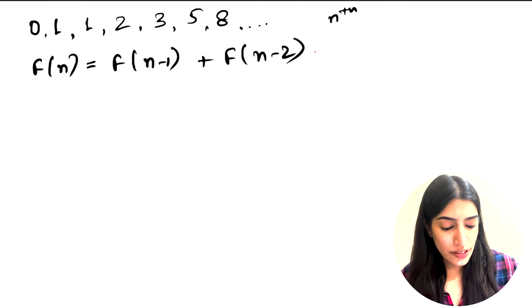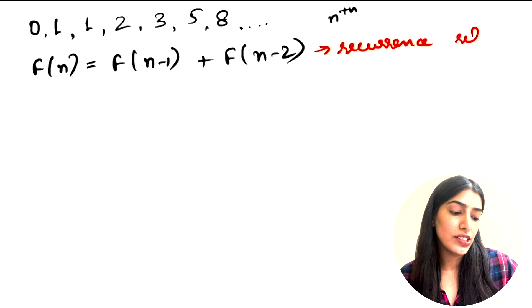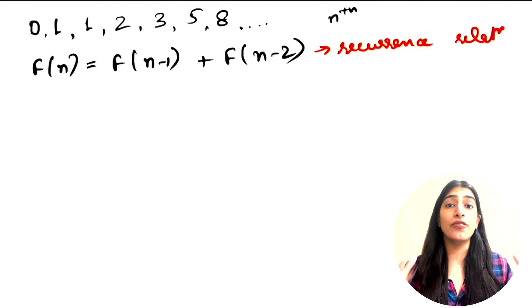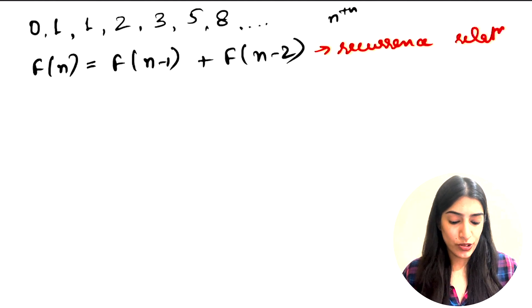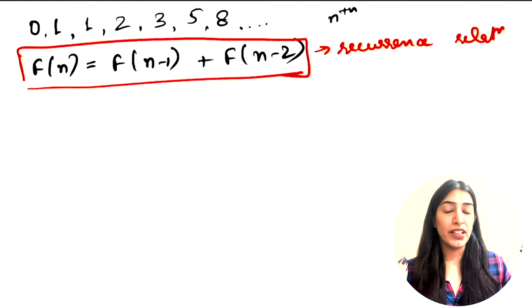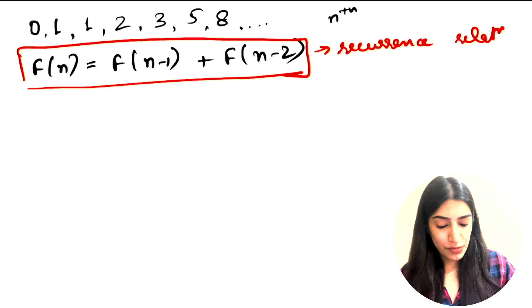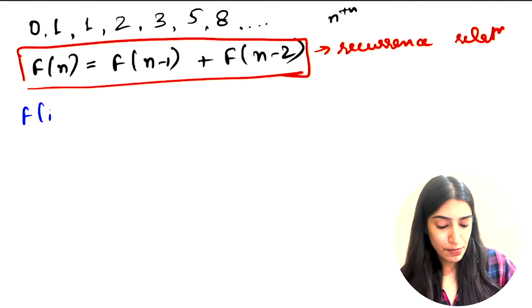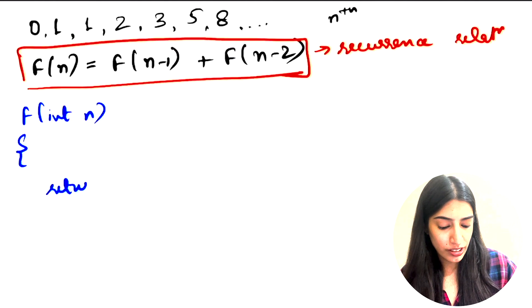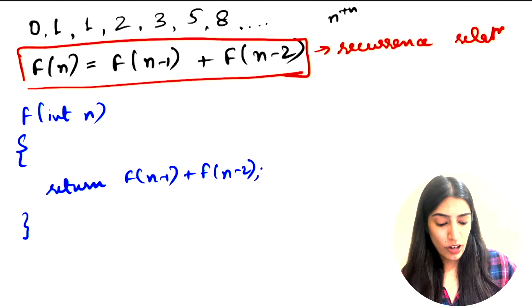This is the first important point: the recurrence relation. Basically whenever someone asks what is the formula of the recursion you're going to use, this is a mathematical equation explaining that you can apply recursion using this basic formula. So our function f takes an integer n and returns F(n-1) plus F(n-2) — the same thing.